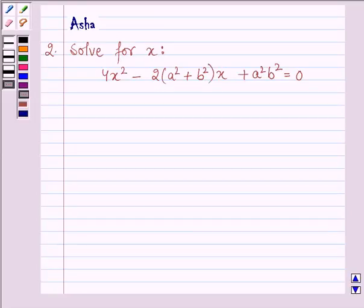Hello and welcome to the session. The given question says solve for x, and the given quadratic equation is 4x² - 2(a² + b²)x + a²b² = 0. Let's start with the solution.